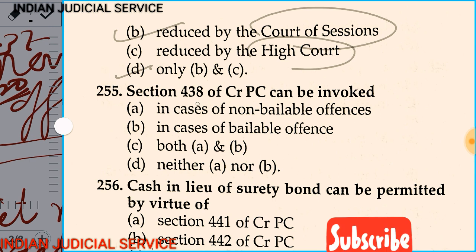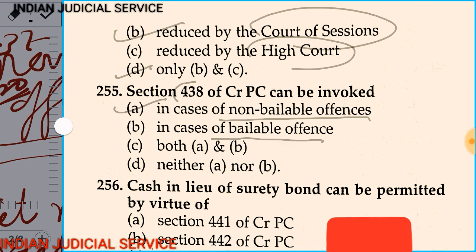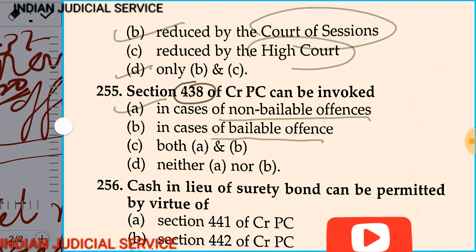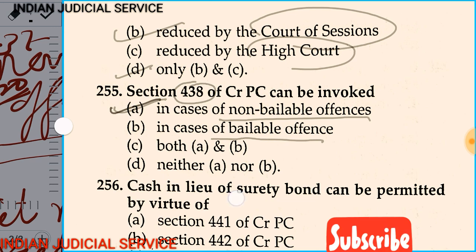Question number 255: Section 438 of CrPC can be invoked in — option A: case of non-bailable offence, option B: case of bailable offence, option C: both A and B, option D: neither A nor B. Section 438 provides for anticipatory bail. A person apprehending arrest in a non-bailable offence may apply for anticipatory bail in the high court or session court. The answer is option A: non-bailable offence.